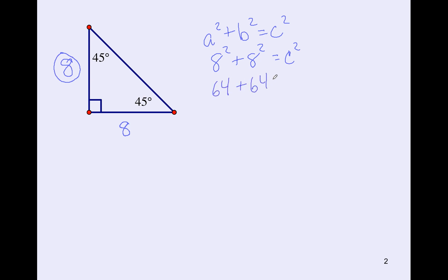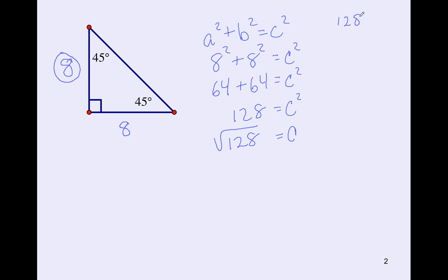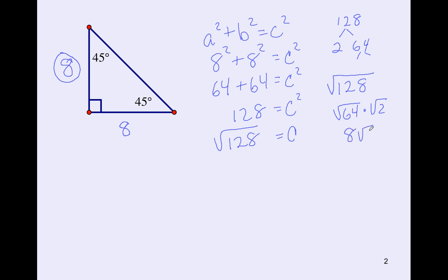64 + 64 = c², so c² = 128. c = √128. We won't use decimals here — either do a factor tree or look at your table of perfect squares. √128 = √64 × √2 = 8√2. So the two legs are 8 and the hypotenuse is 8√2.